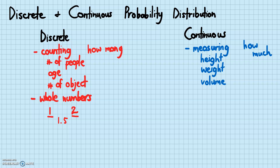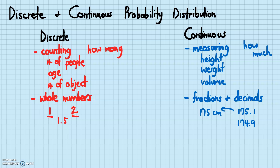Whereas continuous data usually deals with fractions and decimals. For example, your height — let's say your height is 175 centimeters. Your height would actually not be exactly 175, but maybe 175.1 something or 174.9 something, and you usually round it to the whole number. So the accurate data for continuous type of data are actually in fractions and decimals.